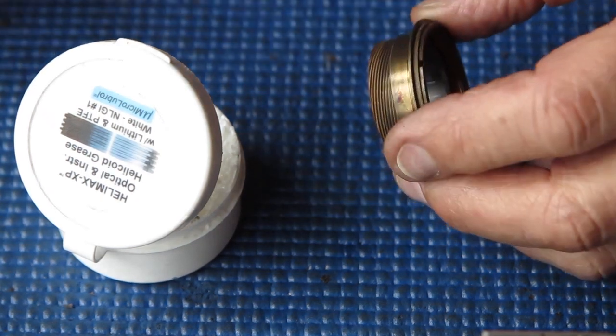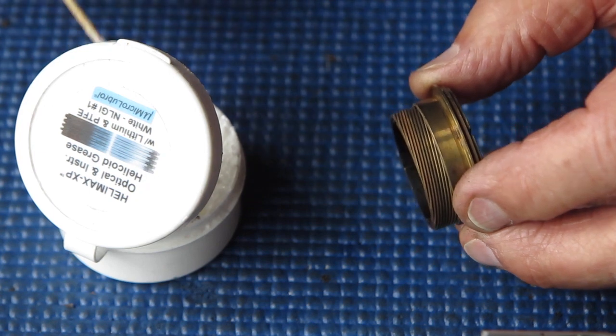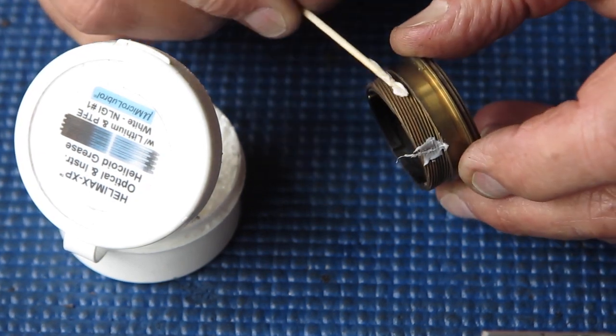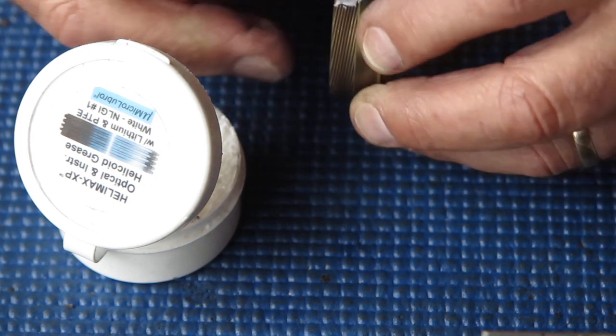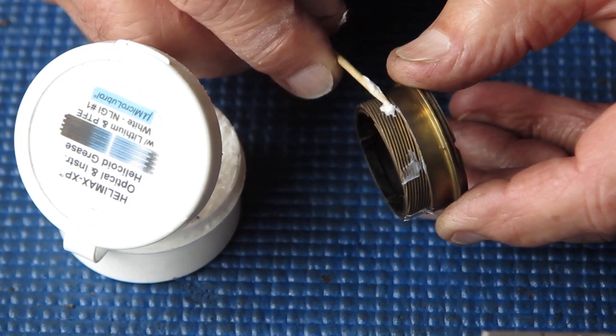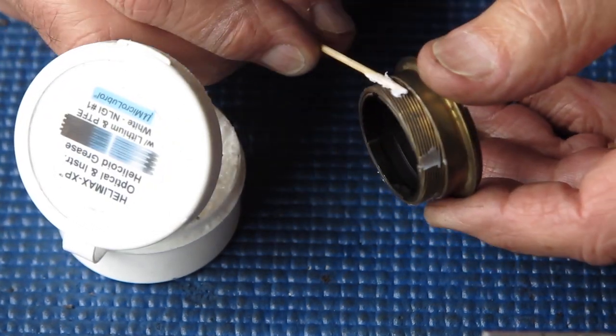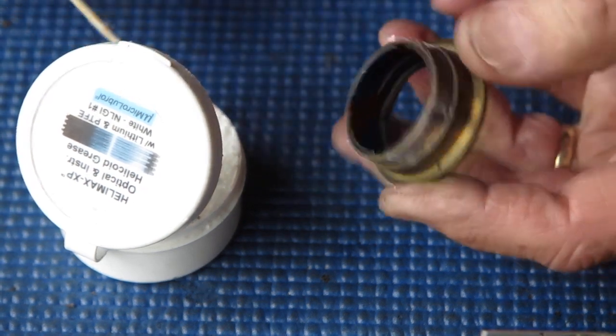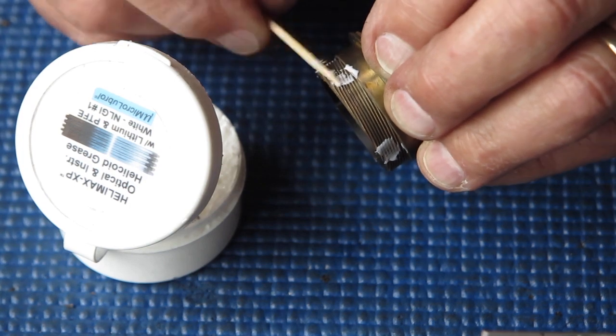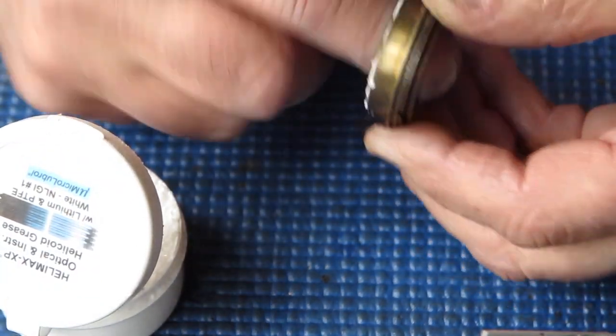I've got the grease. The grease I use is this stuff called Halimax XP Optical and Instrument Helicoid Grease. You don't need an awful lot. I put a smear across there in five or six places.